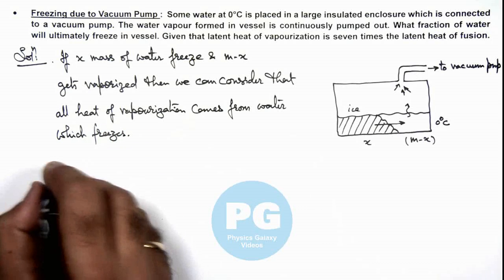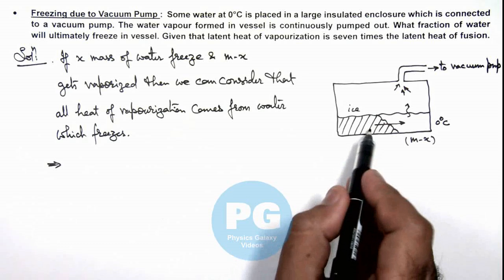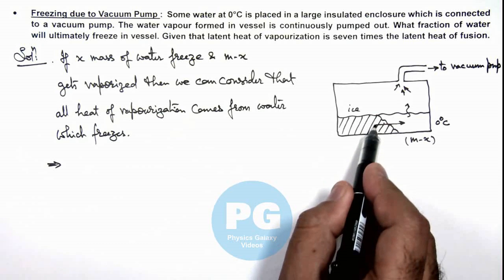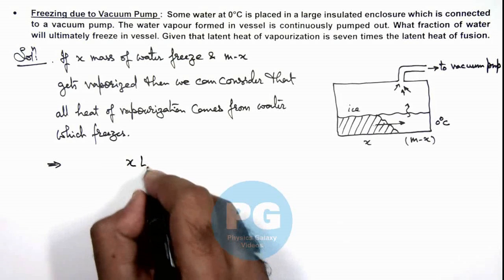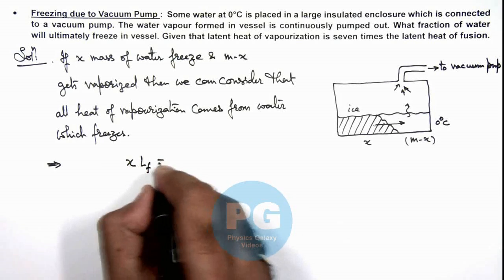This implies here we can write the amount of water which we are assuming that it is freezing is x. So it releases an amount of heat x multiplied by latent heat of fusion,